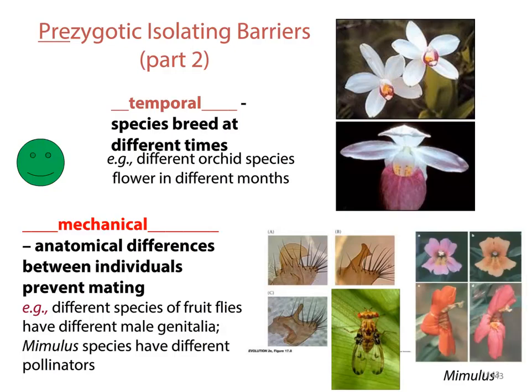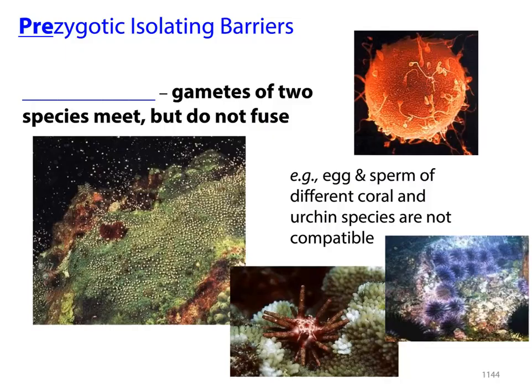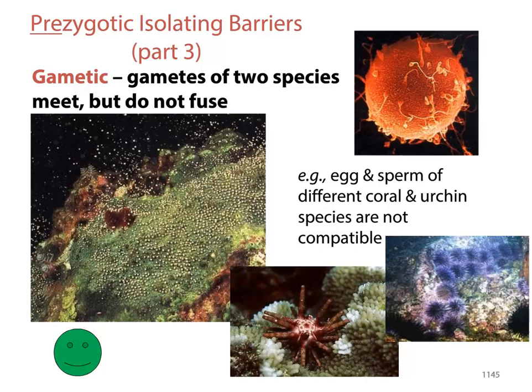We also have mechanical isolation — anatomical differences between individuals that prevent mating. One example: in fruit flies, different species have different genitalia. Also, species of plants will have different pollinators based on who they're trying to attract. There's also gametic isolation, where the gametes of the species meet but they don't fuse — for example, eggs and sperm from different coral and urchin species are not compatible. They have chemical signals that will not allow them to cross, and that's what keeps them as individual species.